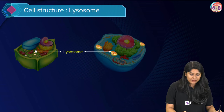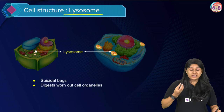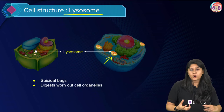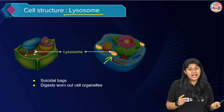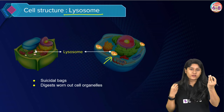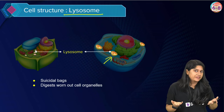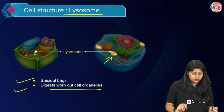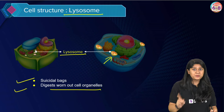Lysosomes are called the suicide bag of the cell. They contain hydrolytic enzymes. When a cell is not performing properly or is damaged, lysosomes release all these hydrolytic enzymes, leading to the death of the cell. Lysosomes also play an important role in cleaning out waste material — if any foreign substance enters the cell, lysosomes engulf it and the enzymes break it down. They also help in digesting worn-out cell organelles. This can easily come for a two-mark question.